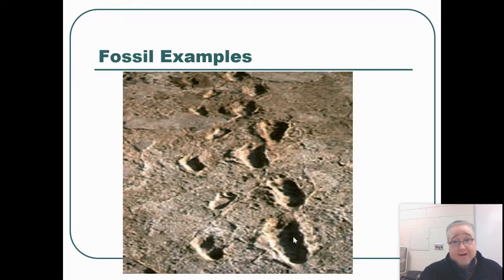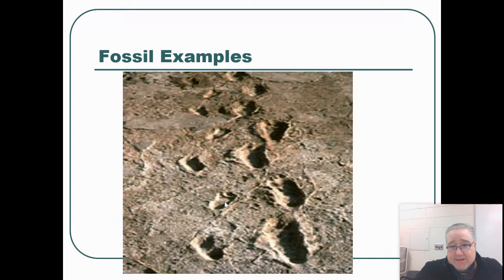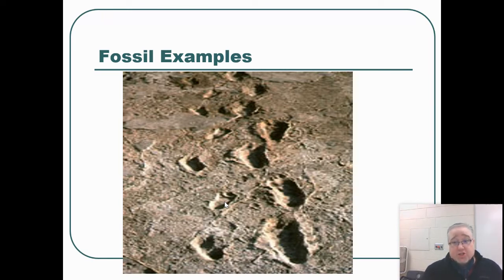Just some examples here of fossils. Here are some footprints that are in Africa, in a place called Laetoli. They're actually some of the oldest footprints of human ancestors. We can actually learn a lot from a fossilized footprint — we can tell about the posture of the individual, how they walked, possibly how big or tall the organism was, depending on the strides between each footprint.